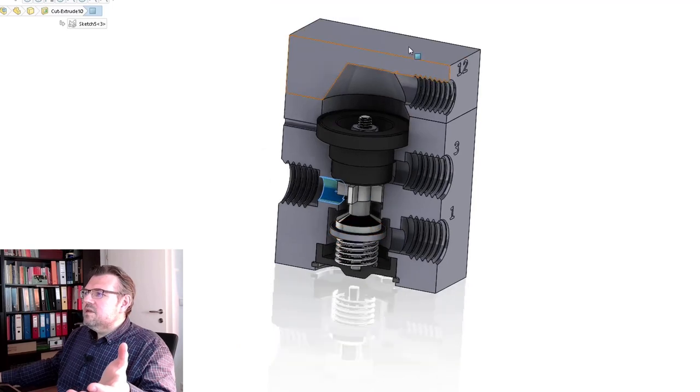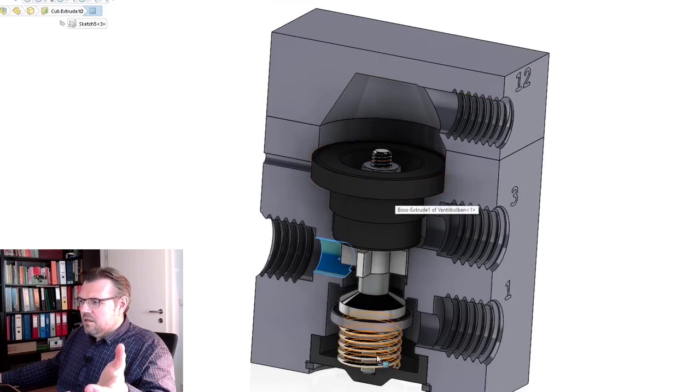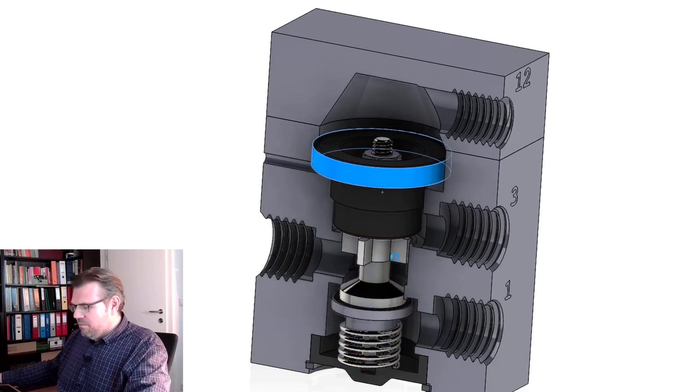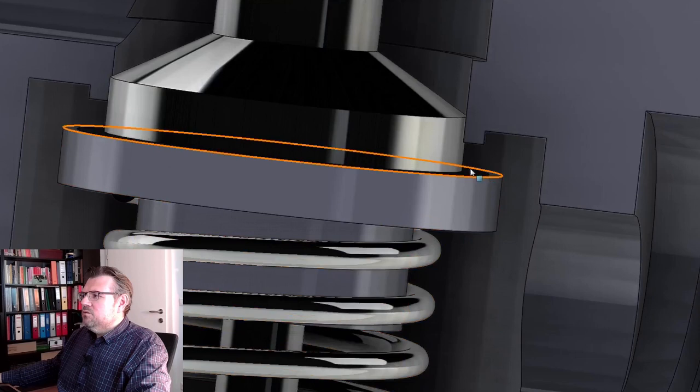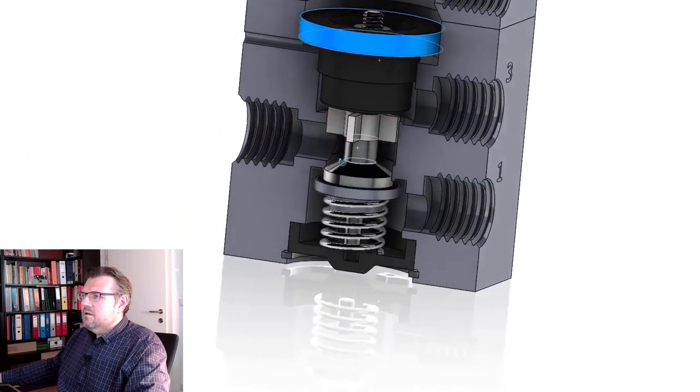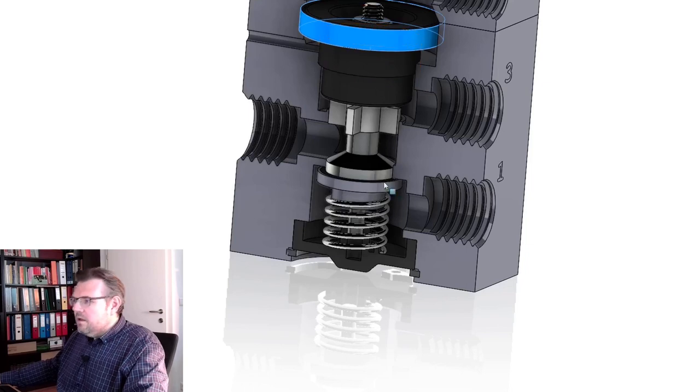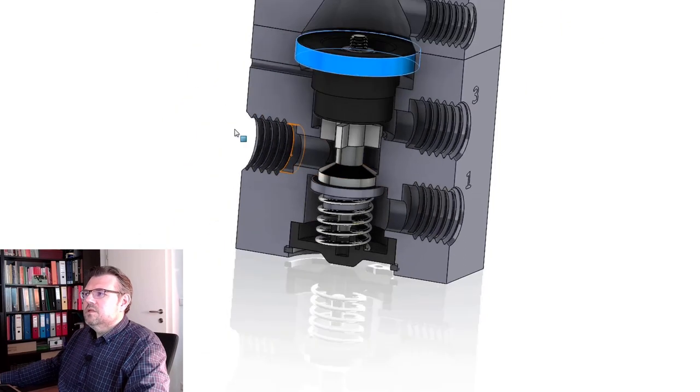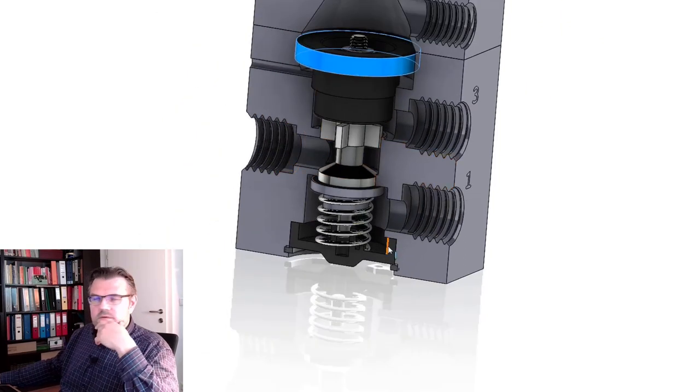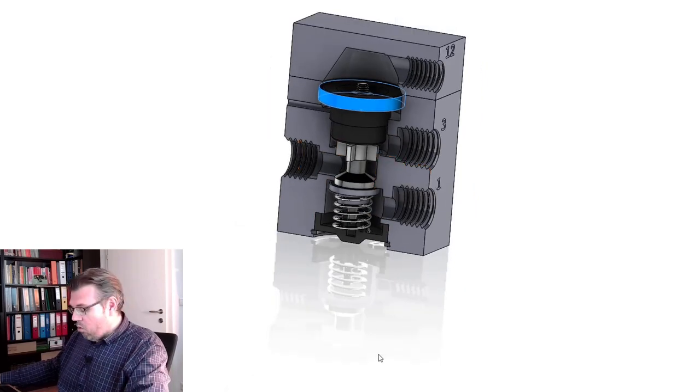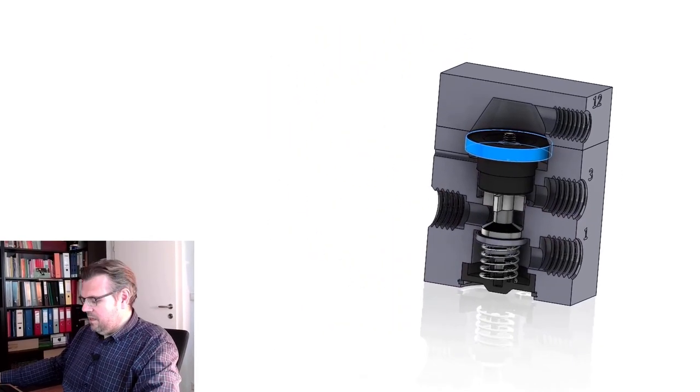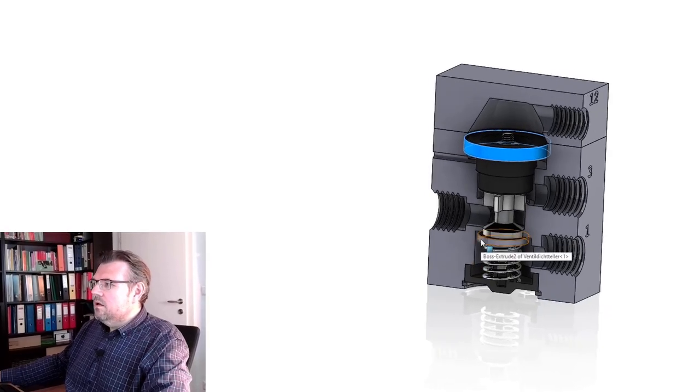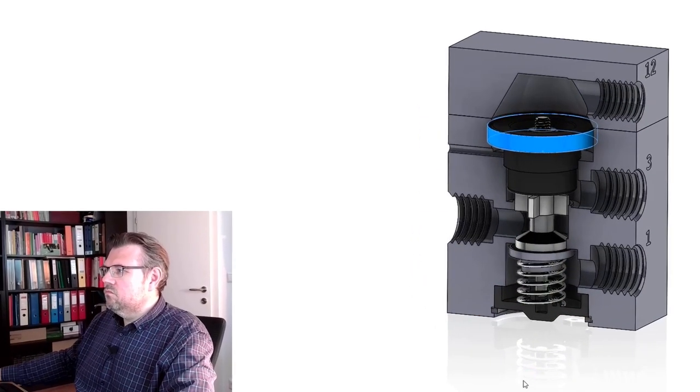Once we release the pressure here on the 1-2 side, the spring will unload, this will go up. Somewhere in the middle, we have again the situation where we connect all things to each other. And if it move in further, this will be pressed here and we are sealed. 1 and 2 is again sealed, and 2 and 3 is opened. So this is a pneumatically operated valve, this is a pneumatically operated valve, 3-2-way valve, and with overlapping.